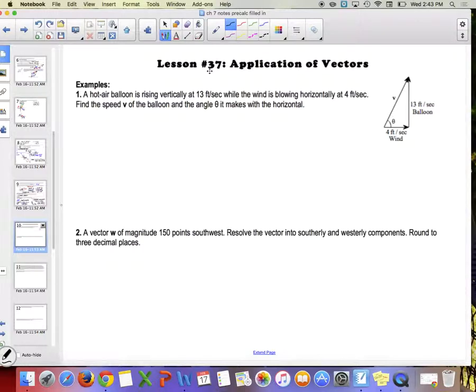Stop talking, please. All right, so it says find the speed v of the balloon and the angle theta that it makes with the horizontal. This is kind of just a quick review of what we've done before, it's just phrasing it in a different way, right? It's almost like it's saying that this vector is 4, 13 in component form, and it's asking for the angle that it makes and its length. So that's what we're doing. The speed ends up being the magnitude.